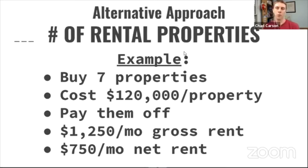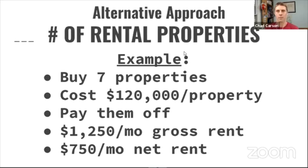Here's an alternative approach to setting a goal for your retirement number. It's simply to set a certain number of rental properties and work backwards from there. For example, let's say your goal is to buy seven rental properties.